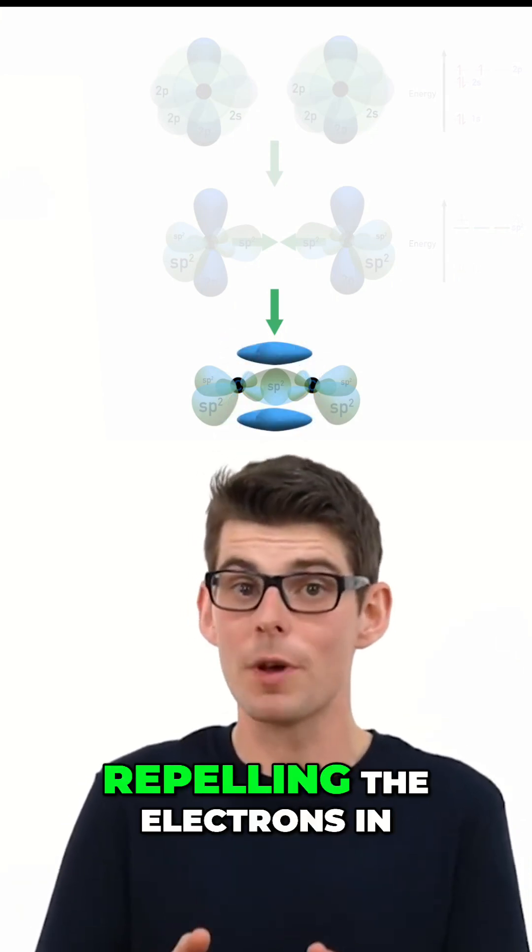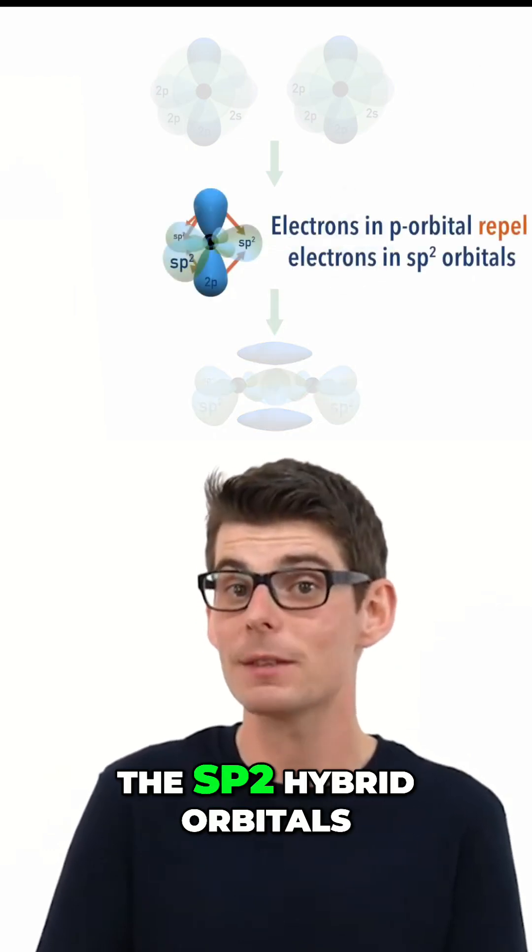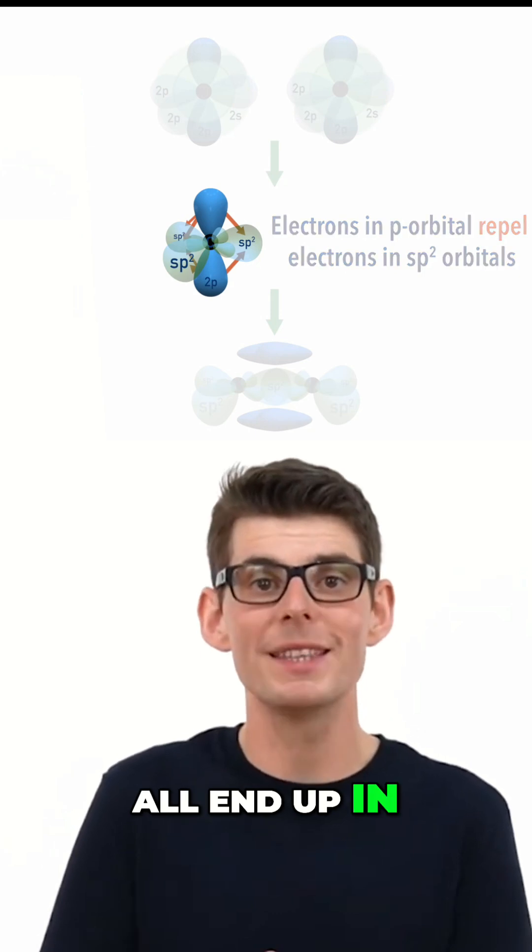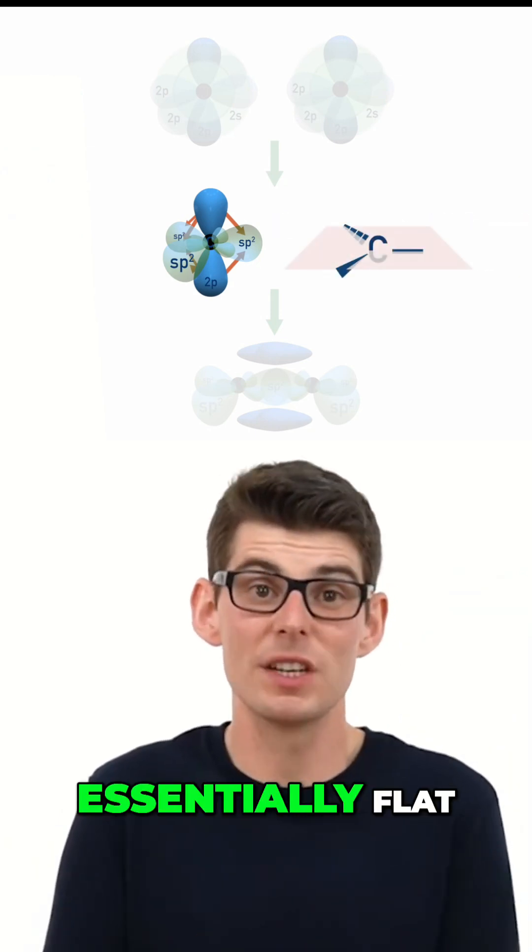Due to the electrons in the p orbitals repelling the electrons in the sp2 hybrid orbitals, the sp2 hybrid orbitals all end up in the same plane, essentially flat.